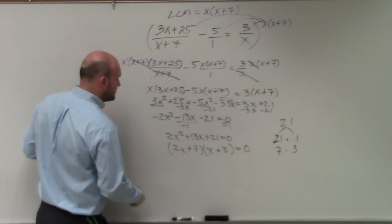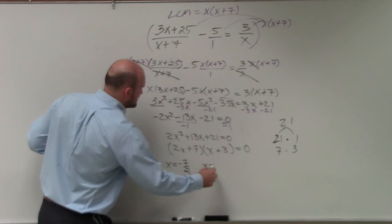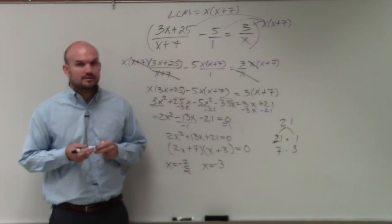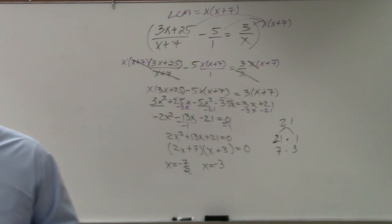Okay, now I can apply the zero product property, set them both equal to 0, and I get x equals negative 7 halves and x equals negative 3. Starting to move ahead a little bit quicker, maybe have a question on a step that I skipped because I did skip a couple.